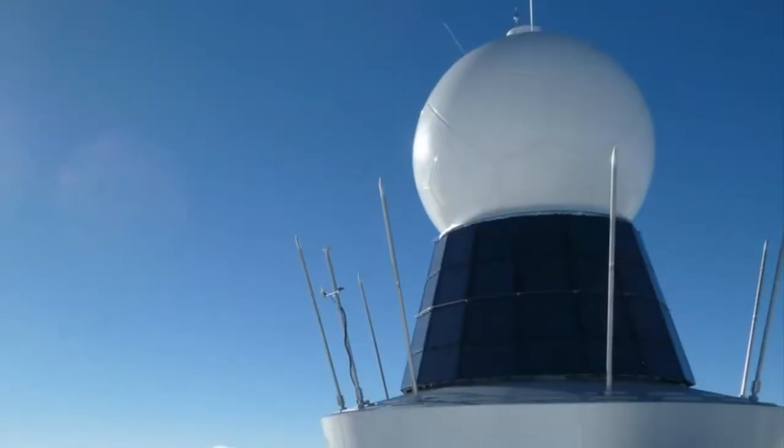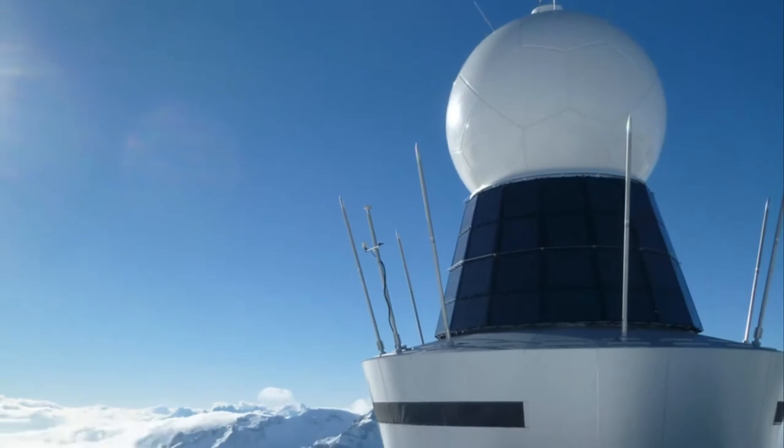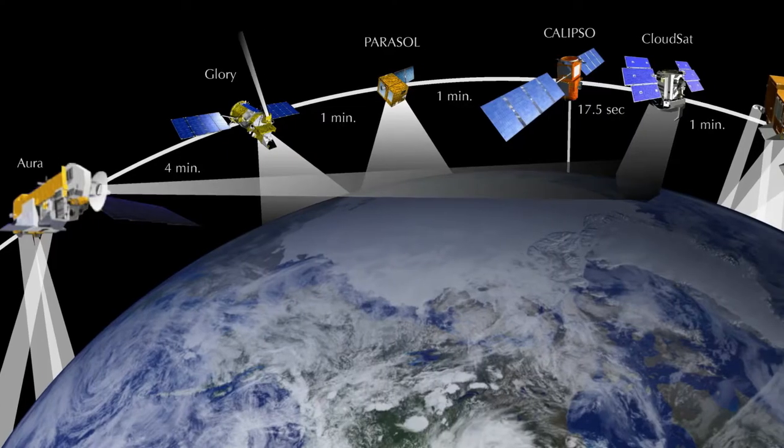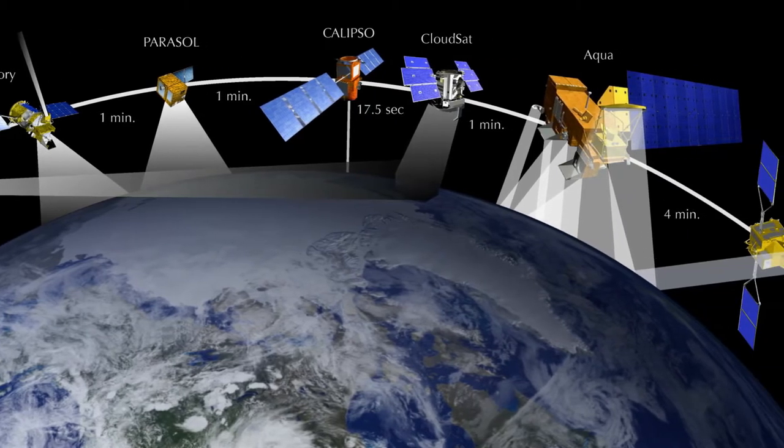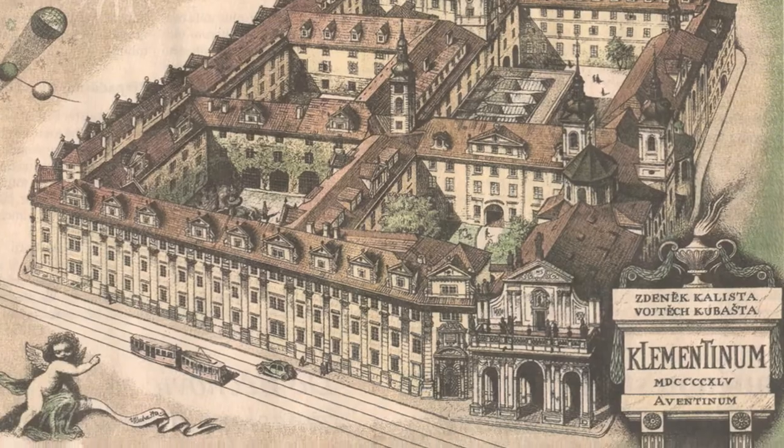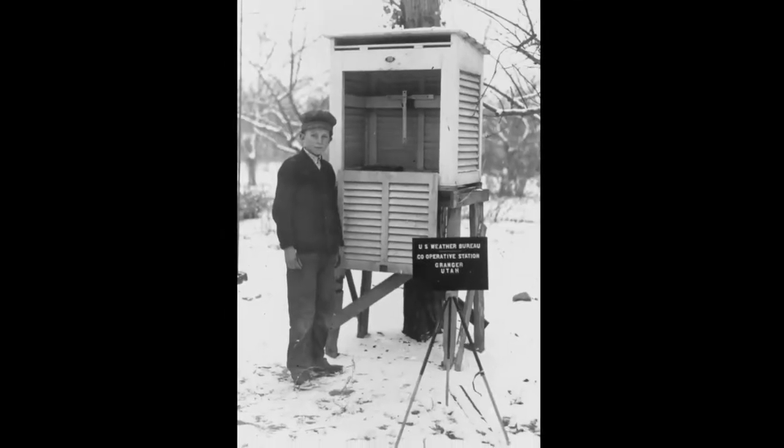Today we have many observations from weather stations, ships, buoys and satellites that measure weather systems in different spectral bands from different angles and at different times. In the past, however, observations were very sparse and we only have few records.